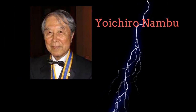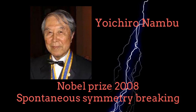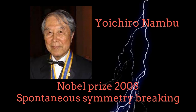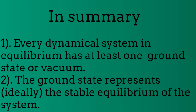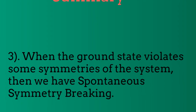Yoichiro Nambu received the Nobel Prize in Physics in 2008 because of the discovery of spontaneous symmetry breaking. In summary, every dynamical system in equilibrium has at least one ground state or vacuum. The ground state usually represents a stable equilibrium of the system. When the ground state violates some symmetries of the system, then spontaneous symmetry breaking has occurred.